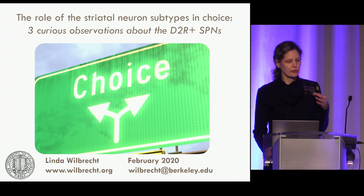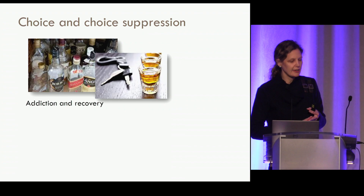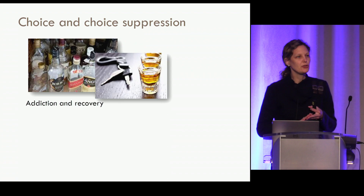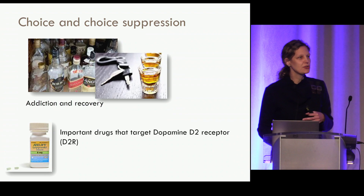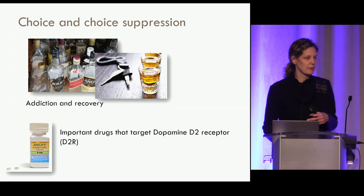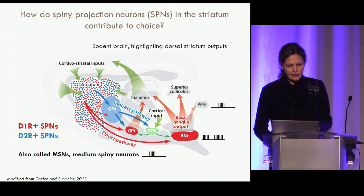Before I get into the details of the circuits and cells, a brief mention of why this work might be important. I'm particularly interested in addiction and recovery, and the striatum is implicated in these processes. We're interested in the role of D2 receptor-expressing indirect pathway neurons and their potential role in suppression or rejection of choices, which would be important for addiction. Also, D2 receptor pharmacology is big business — blockbuster drugs act on these receptors and are used in antipsychotics and antidepressants, and we don't really have a great idea of how they work.